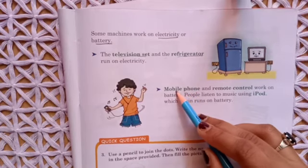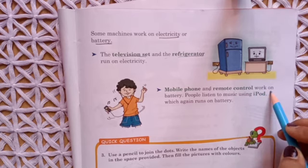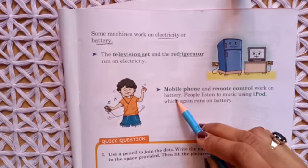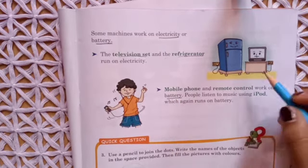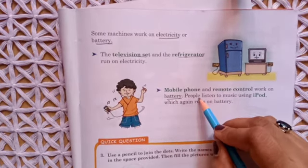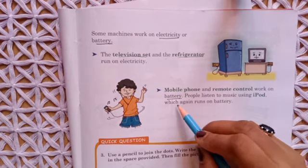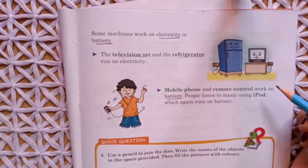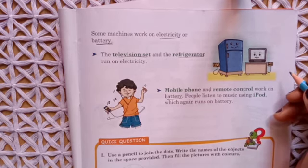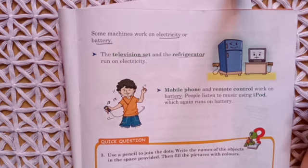Machines that run on battery include mobile phones, laptop, and smart speakers used to listen to songs. The mobile phone and the TV remote work on battery. People also listen to music using an iPod, which again runs on battery — it needs to be charged.